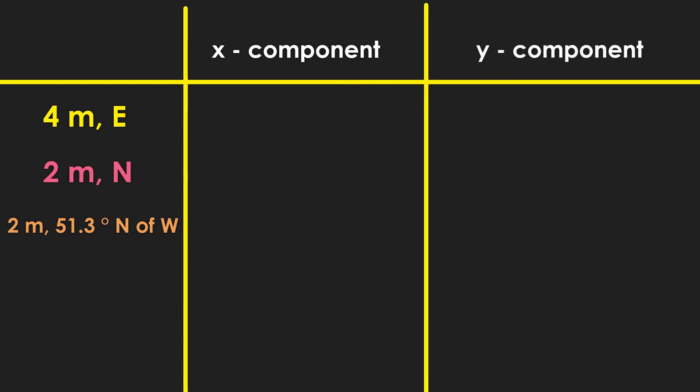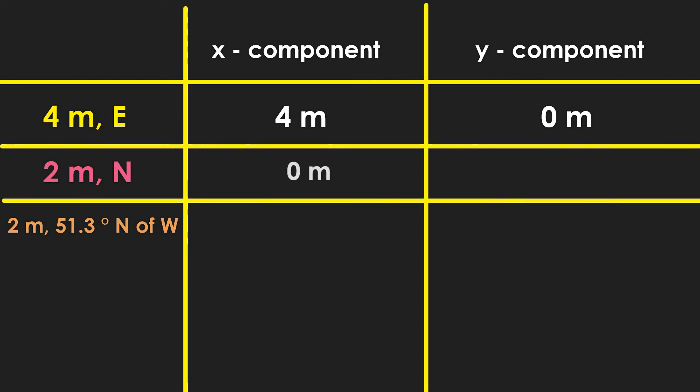Now for our first vector, it was only headed towards the east or the positive x axis. So we have 4 meters for the x component and 0 for the y component. The second vector was only headed north or the positive y axis. So we have 0 for the x component and 2 meters for the y component.